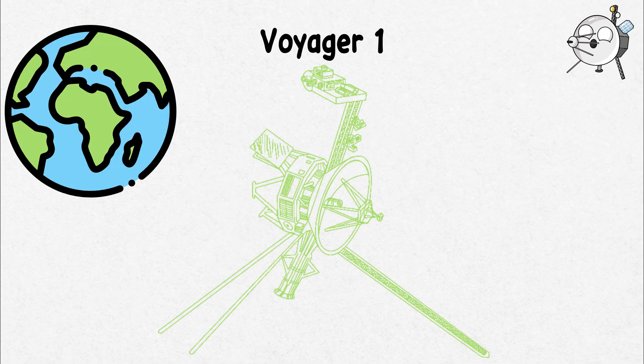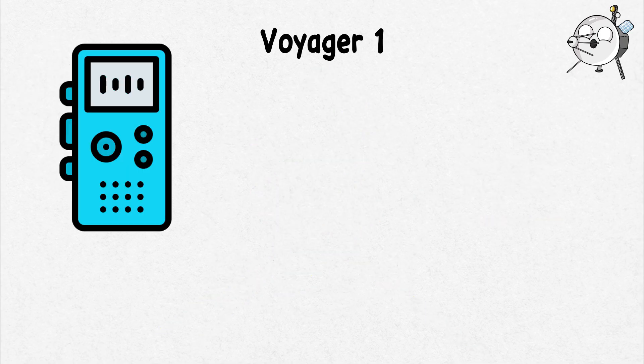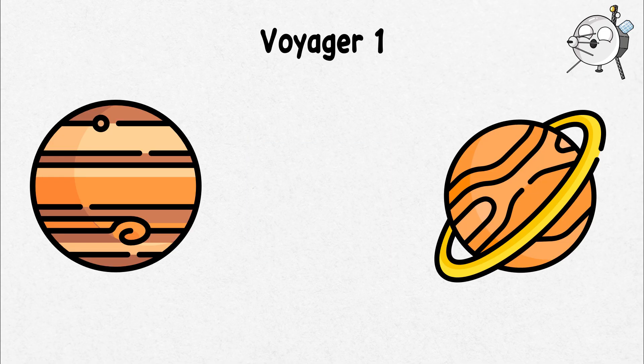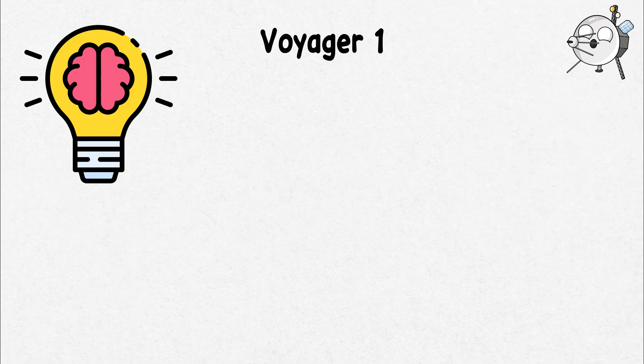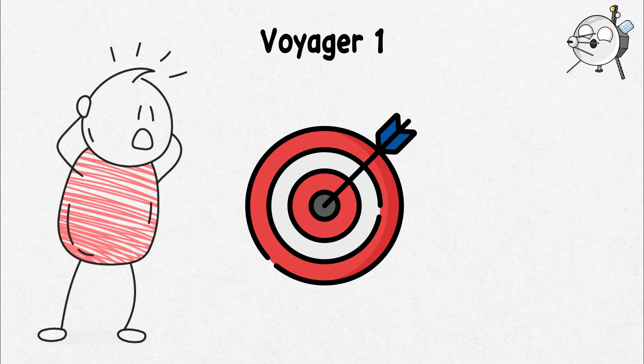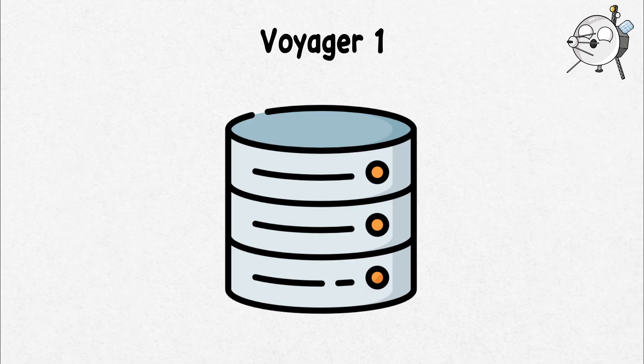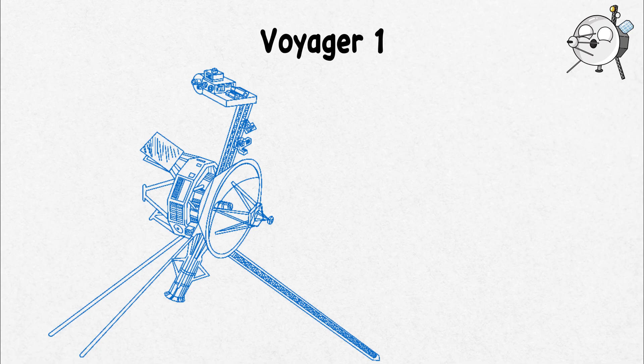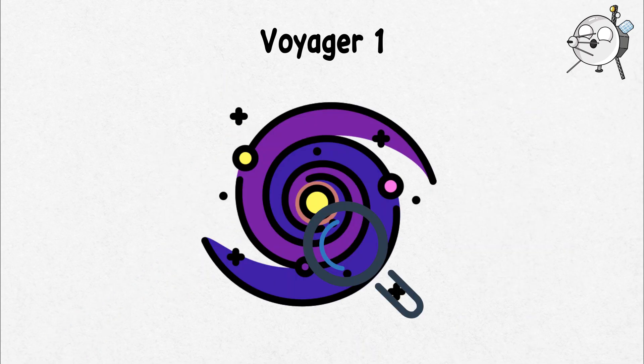Voyager 1's journey has been nothing short of epic. It had sent back beautiful images and valuable data from Jupiter and Saturn, capturing the imaginations of millions, but its mission didn't stop there. Loaded with a special record filled with sounds and images of Earth, Voyager 1 began a new adventure, exploring new parts of space.